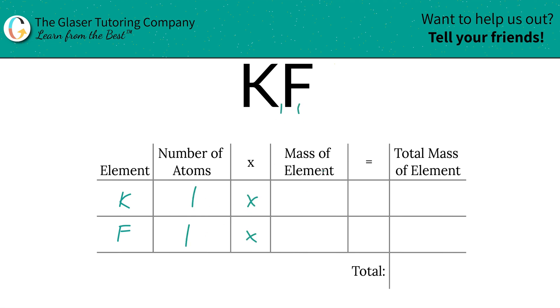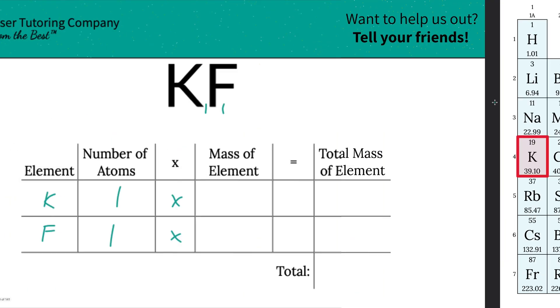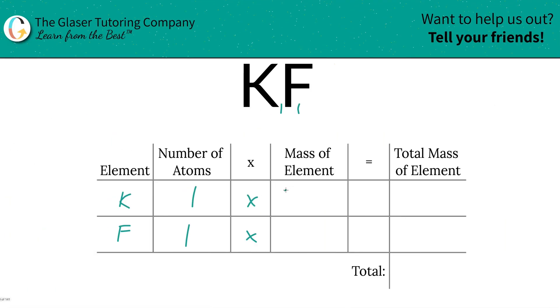Then we're going to multiply those numbers of atoms by the mass of the elements. That's where the periodic table comes into play. So potassium is 39.10 and fluorine is 19.00. So let's write them on in — 39.10 and 19.00.